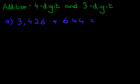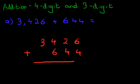So let's do the first step, which is to convert this horizontal question into a vertical format, into columns. So let's do that over here. 3426 plus 644. And let's label the columns as well.